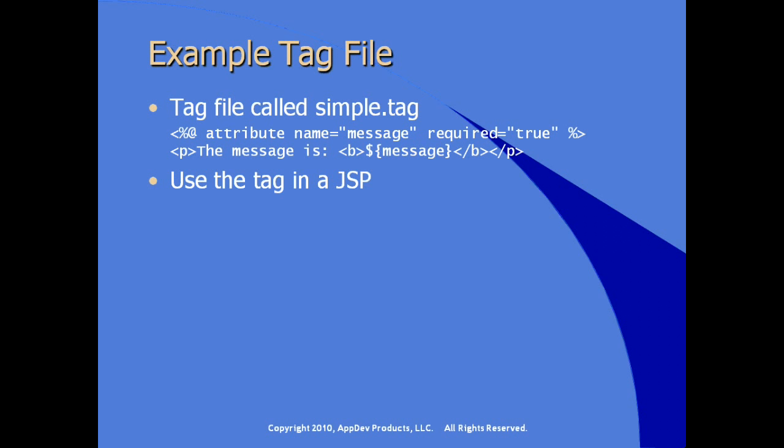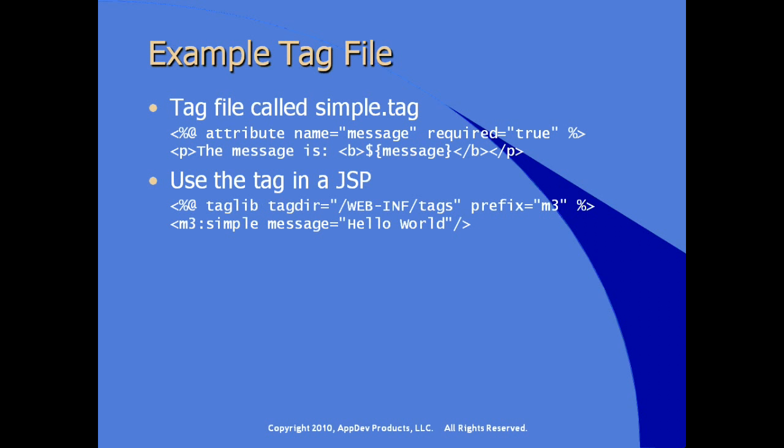Outside of this tag class, you use the tag in a JSP just like you would any other tag, except for the taglib directive. Some extra steps need to be taken in the taglib directive. Instead of using URI, we use the tagdir attribute, pointing to the folder where tag files are found. The prefix is used the same way, and then we use the tag — the syntax for using the tag from the simple.tag file. The name of the file is the name of the tag, and the attribute name is message, sending the value hello world.